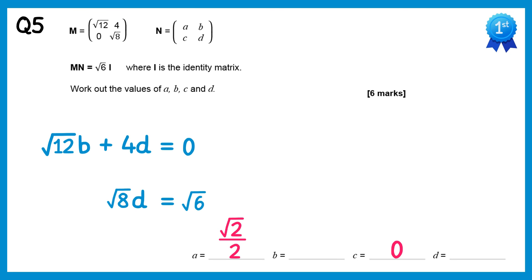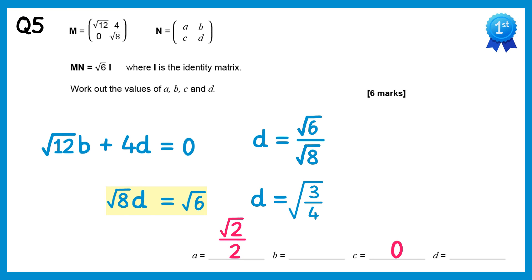Looking at the bottom equation: root 8 times d equals root 6. Dividing both sides by root 8 gives d equals root 6 over root 8. Since 6 over 8 simplifies to 3 quarters, we write this as the square root of 3 quarters. Splitting the fraction: the square root of 3 on top, and the square root of 4 on the bottom. Since root 4 equals 2, this simplifies to root 3 over 2. So d equals root 3 over 2.